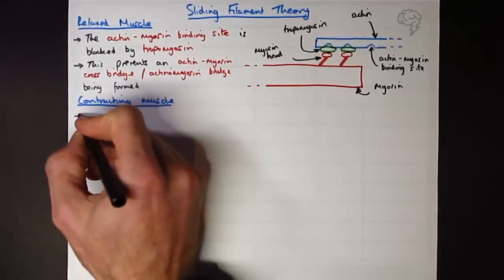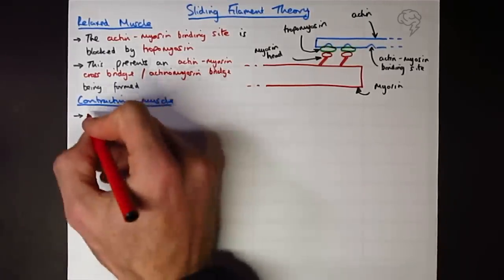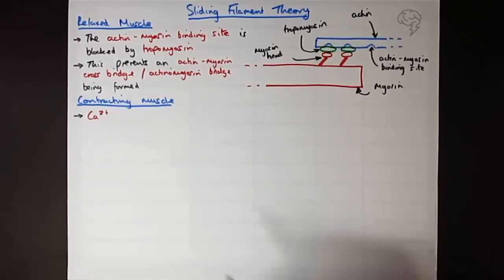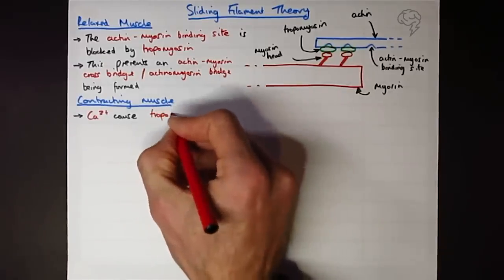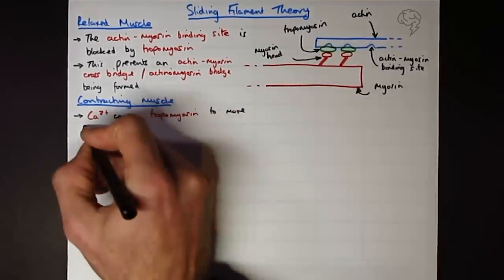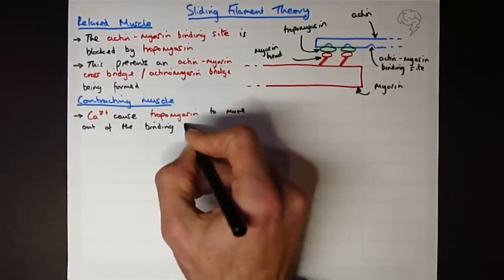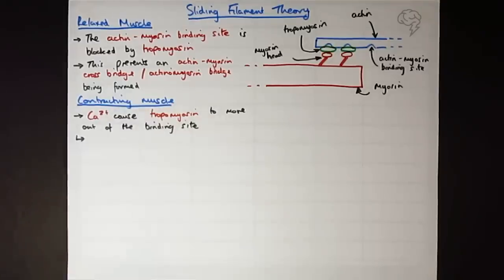When the action potential reaches the sarcoplasmic reticulum, it releases calcium ions. If you're not sure where or how these calcium ions come about, you can revisit the lesson on neuromuscular junctions. But for here, I'm going to say the calcium ions cause the tropomyosin to move out of the binding site. What happens now? Now there's nothing blocking there. This is going to allow the myosin or actinomyosin crossbridge to be formed.